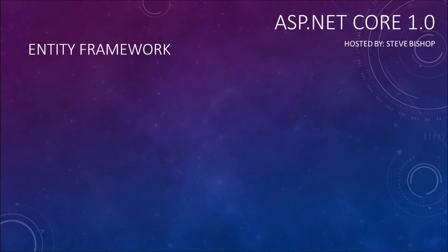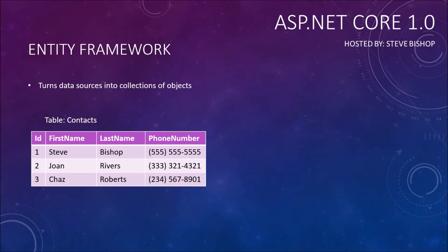A brief statement of what Entity Framework does is that it basically turns data sources into collections of objects. So it turns your data sources — things like a database — and turns all of that data into various collections of .NET objects that you can then work with in your code. For example, let's say we have a database with a table called contacts, and in this contacts table it has four columns: an ID column, a first name, a last name, and a phone number — which is very similar to the contact object we've been working with in our project.